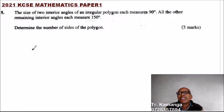Question number five: The size of two interior angles of an irregular polygon each measures 90 degrees. All the other remaining interior angles each measure 150 degrees. Determine the number of sides of the polygon. You get three marks.